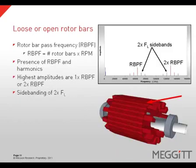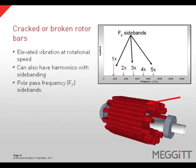Loose or open rotor bars will generate rotor bar pass frequency and possible harmonics in the spectrum. The highest amplitudes are typically at one-times or two-times rotor bar pass frequency. It is also very common to have sidebands around the rotor bar pass frequency spaced at two-times line frequency. Cracked or open rotor bars will cause elevated levels of vibration at running speed and possibly at its harmonics, with sidebands around the rotational speed harmonics spaced at pole pass frequency.